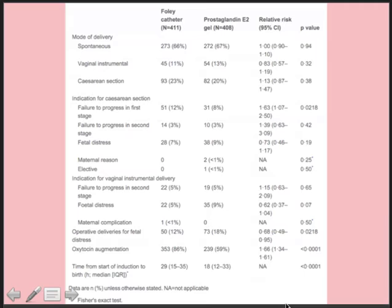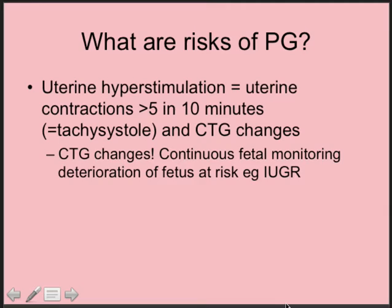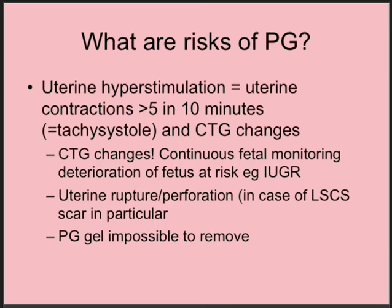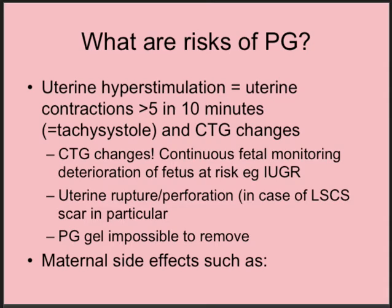Looking at the risks associated with prostaglandins: there was a significant difference in the need for augmentation with oxytocin — slightly more in the Foley catheter group — and a time difference to delivery. The risks when administering prostaglandins vaginally include uterine hyperstimulation, defined as five or more contractions in 10 minutes — tachysystole — and associated CTG changes indicating fetal compromise. Continuous fetal monitoring is therefore important, especially in high-risk situations such as an IUGR fetus. Theoretical risks also include uterine rupture or perforation if inducing labor in a woman with a previous cesarean section scar. Maternal side effects include nausea, vomiting, diarrhea, and a sub-febrile temperature.